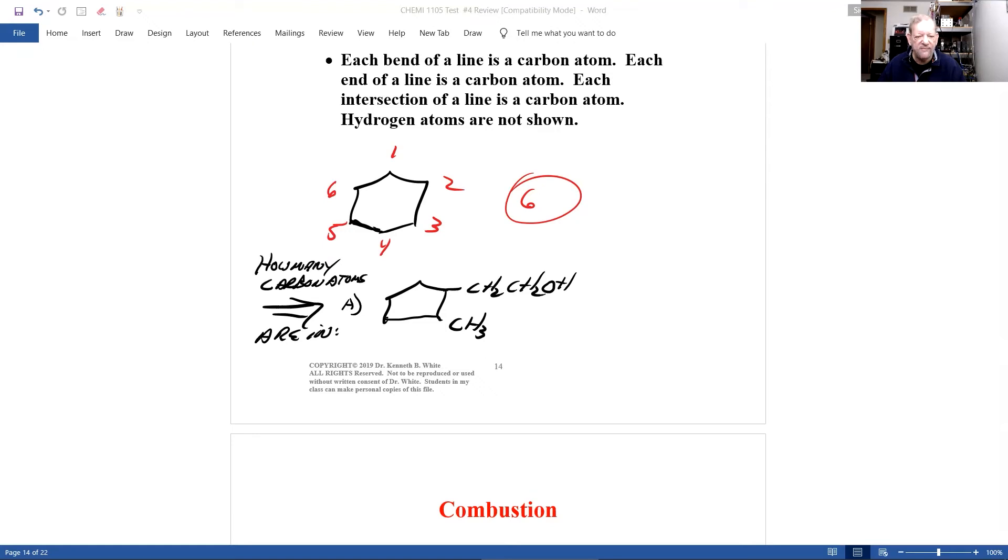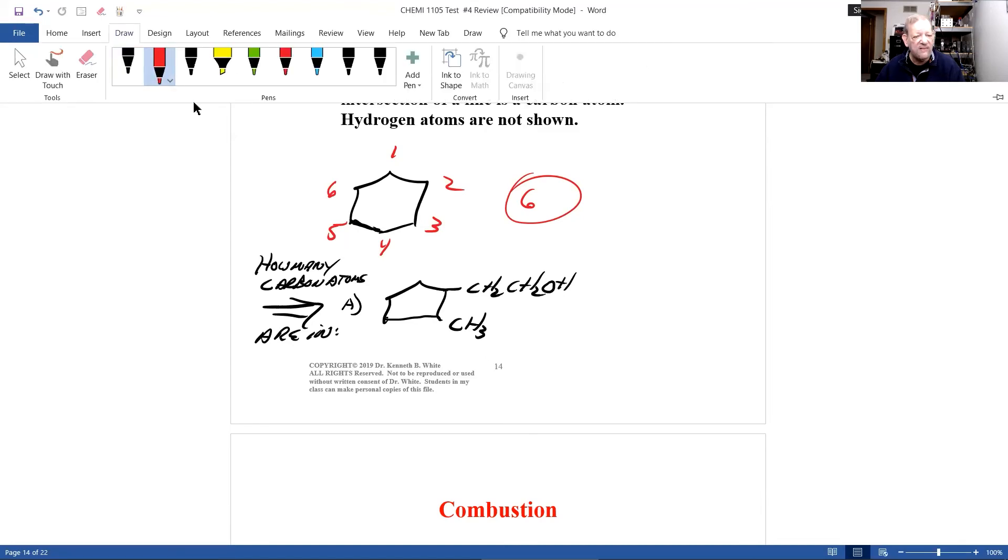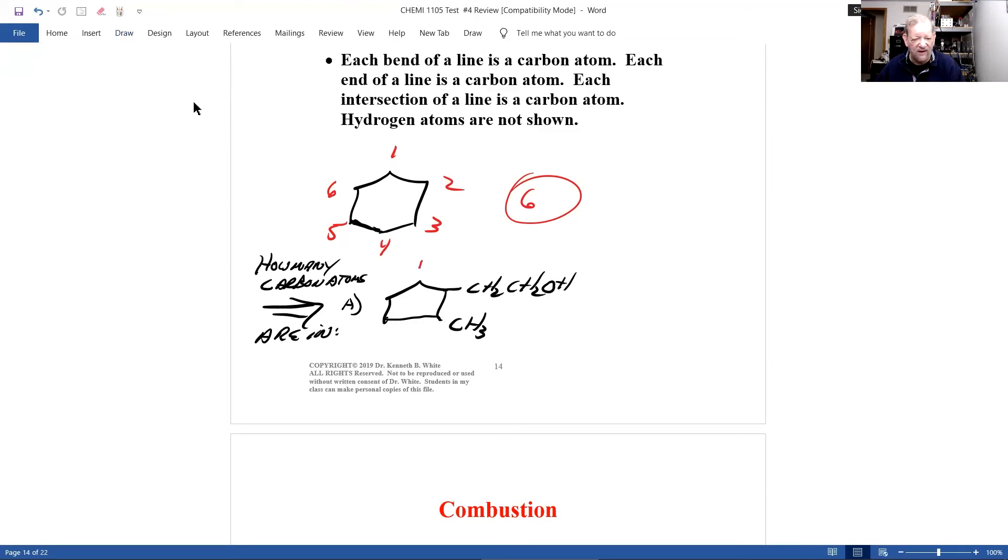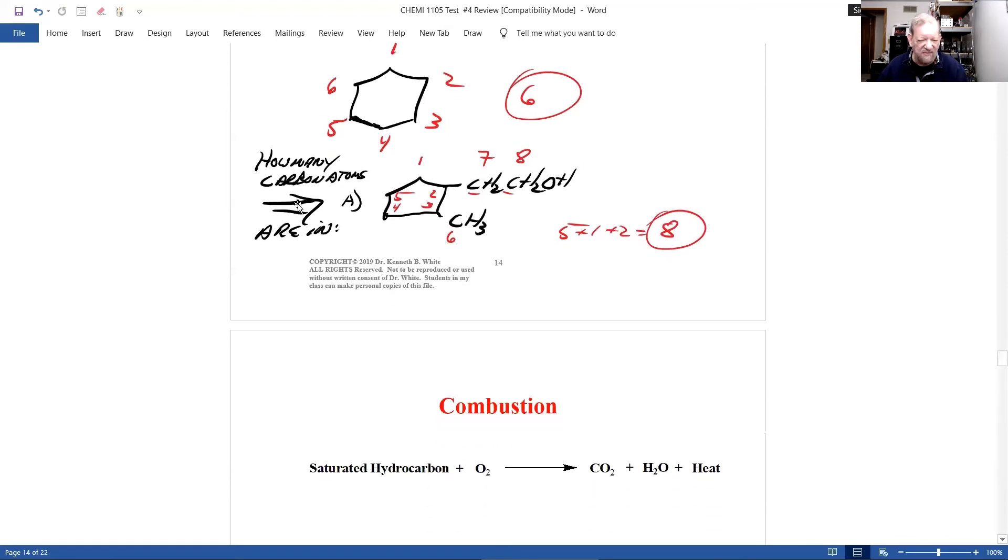All right, I think everybody's done. Let's do it. Well, how many carbons are in that molecule? Well, if I look at the ring, every bend in the line is carbon. One, two, three, four, five. So the ring has five carbons. This one is six, seven, eight. So it's five plus two, five plus one plus two equals eight. And you should know how to do that. If I ask you how many carbons are in a molecule, you should do that.